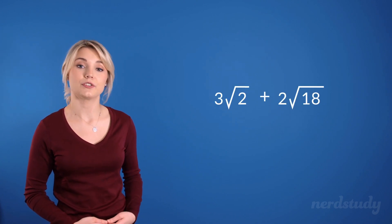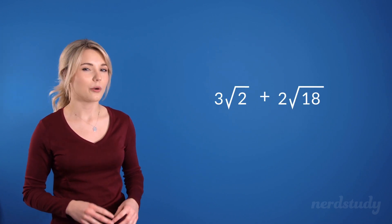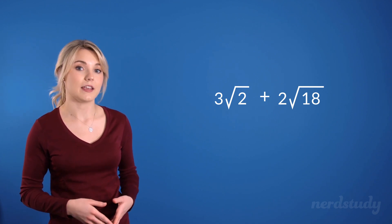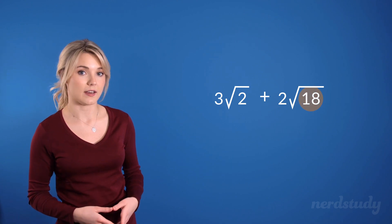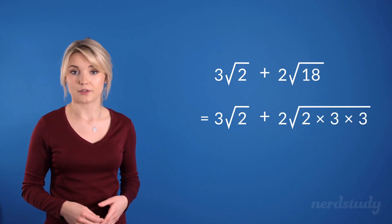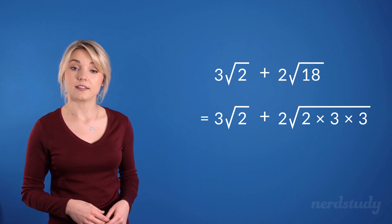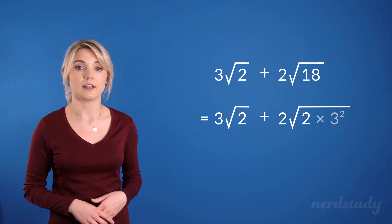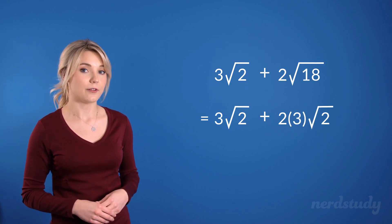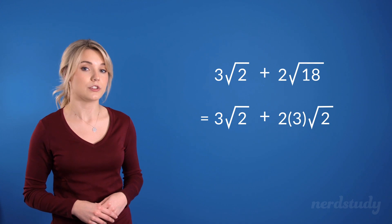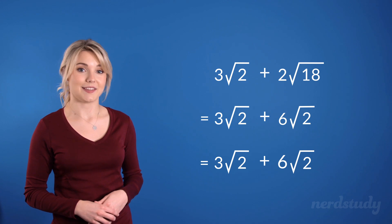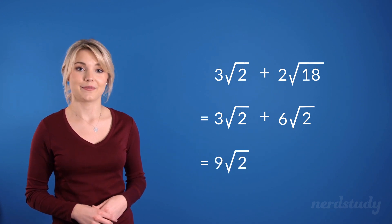For example here we have 3 root 2 plus 2 root 18. Although at first glance it may seem like we can't do anything at this point, we can actually start by taking a look at the prime factors for 18. So we've got 2 times 3 times 3 and we just learned that since 3 times 3 is a perfect square we can actually factor that out to get 2 times 3 here. And if we simplify, we end up with 3 root 2 plus 6 root 2 which we can now add together since the radicands are the same to get 9 root 2. Awesome!